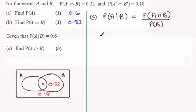It's just a question of putting our values in. We know that A given B has probability 0.6. And if we've called the probability of A intersection B X, then this is going to be X divided by the probability of B which is X plus 0.22. We've just got to solve this equation for X.